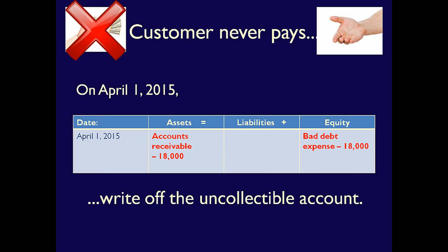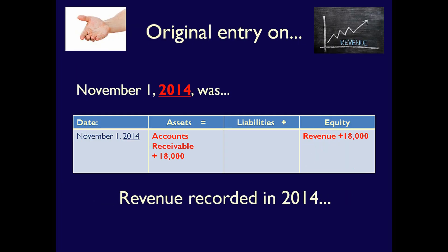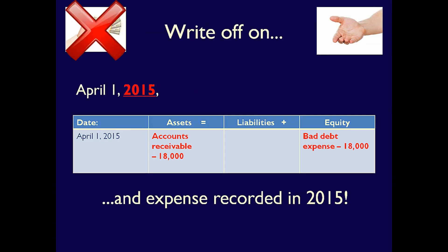So the account has now been written off on April 1st. You're probably thinking: what's wrong with that? After all, the customer went bad, so we should get rid of their accounts receivable. I agree — we have to. But the other side of the entry should not be bad debt expense. Why not? To understand this, you have to go back to the original entry that we did in 2014. In 2014, we recorded an increase in assets and an increase to equity through revenues because we sold services on account. The revenue from that sale is in 2014, on the 2014 income statement. If in 2015 we record a decrease to equity because the customer went bad, the bad debt expense is included in 2015, on the 2015 income statement.